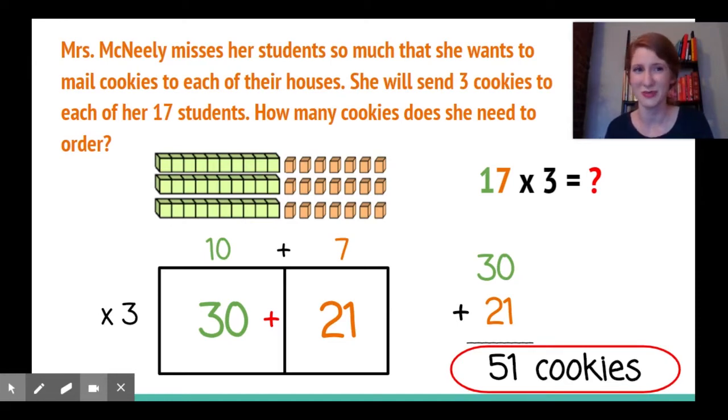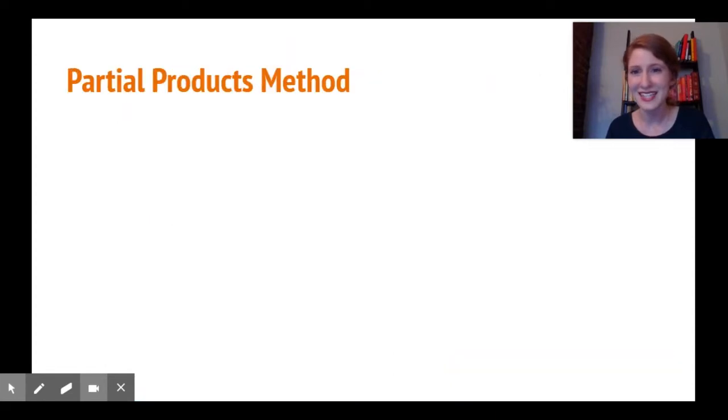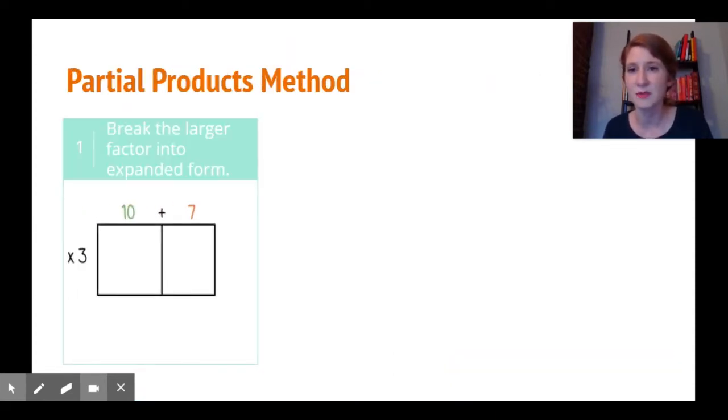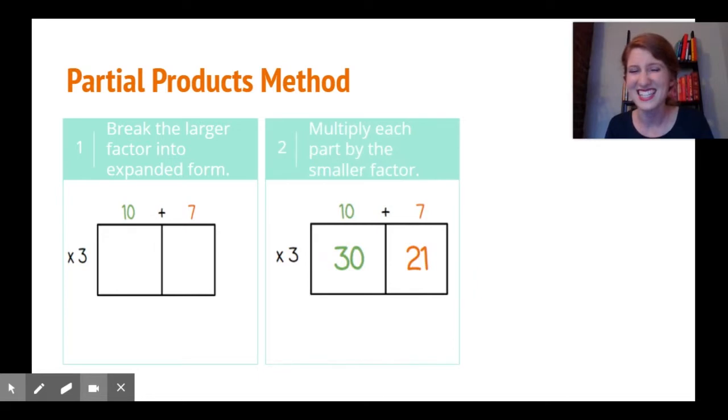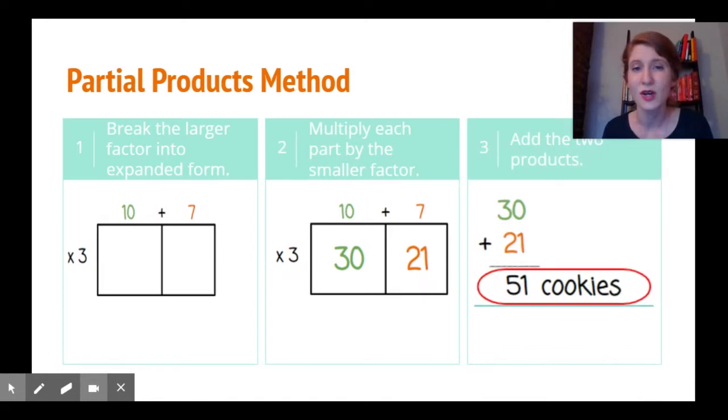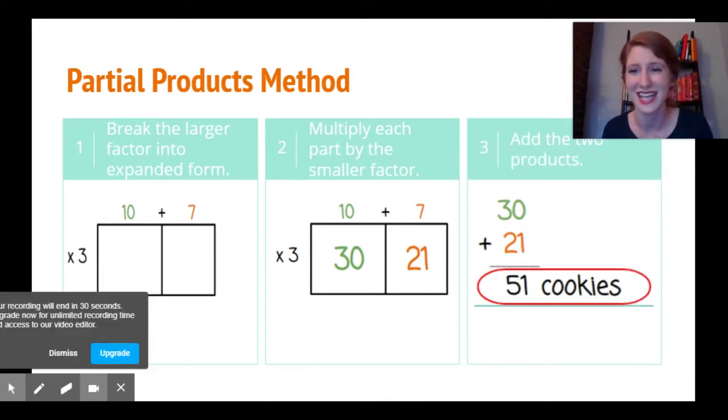Let's look at what we just did using the partial products method. First we break the larger factor into expanded form. Second, we multiply each part by the smaller factor. And third, we add the two products together.